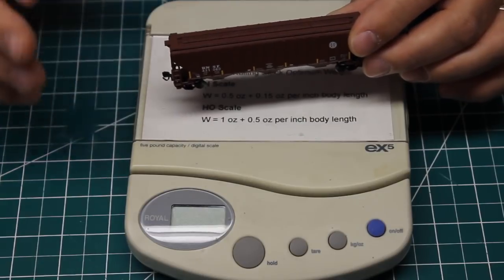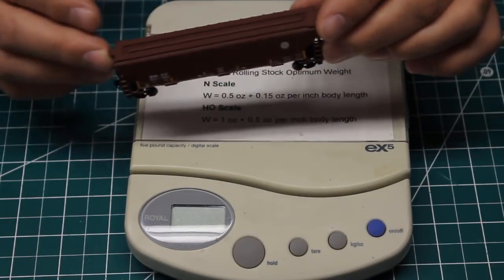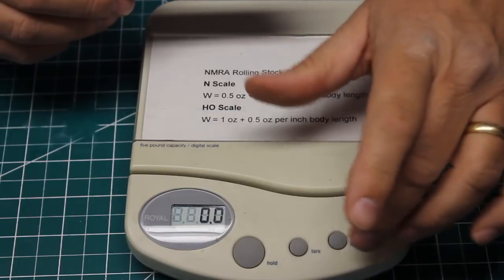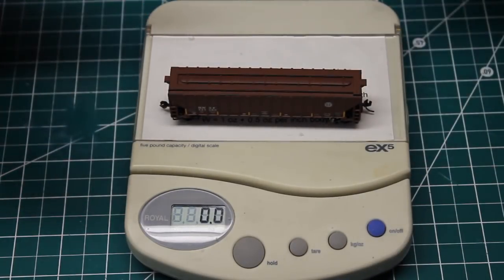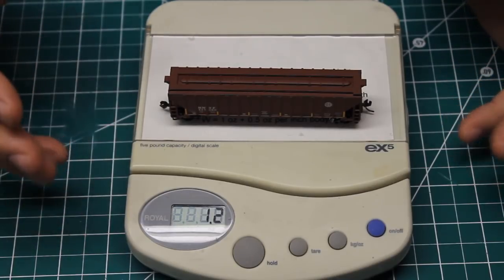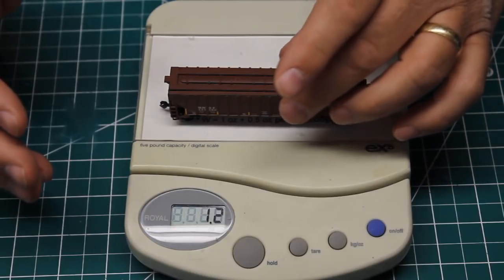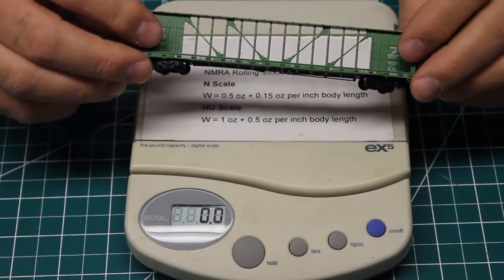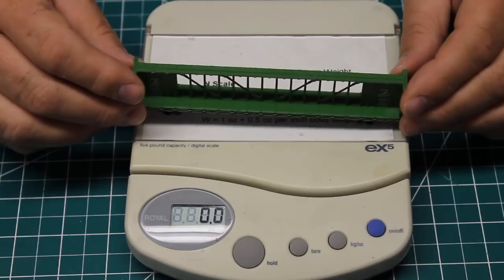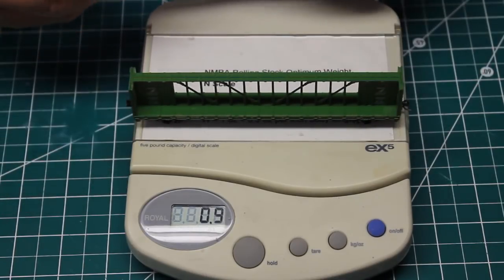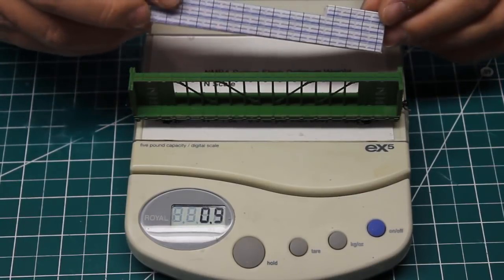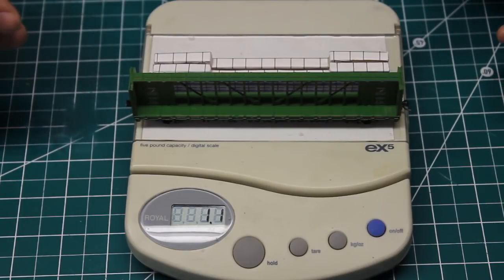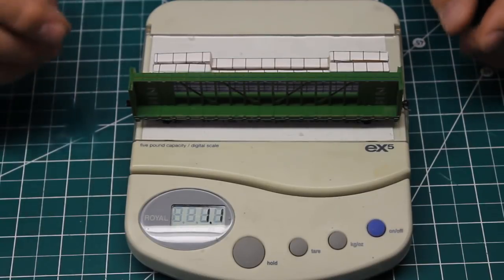This car I happen to know should weigh about 1.1 ounces and I get my scale going here again and if I put this car on here you see it's 1.2 that is well within specifications that I can work with. This center beam flat car I happen to know should weigh closer to 1.3 ounces and if I put it on the scale you'll notice that it only weighs 0.9 it really needs some more weight but I also have a load for it that I run in it and if I lay the load on there to add that much weight now you see it brings it up to 1.1 we're pretty close to the recommended tolerance for that.